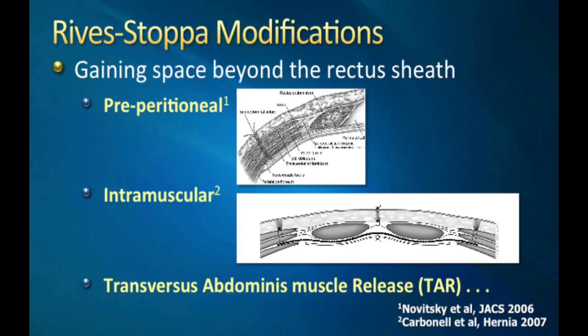There are several techniques that have been described to gain space beyond the edge of the rectus. Things like the pre-peritoneal technique, popularized by Dr. Henniford, which is more of a dissection of a plane amenable to a large piece of mesh rather than a myofascial advancement. The intramuscular technique written by Alfie Carbonell divides the plane between the internal oblique and the transversus abdominus muscle, but the biggest drawback is that it sacrifices all the neurovascular bundles as you enter laterally into this plane.